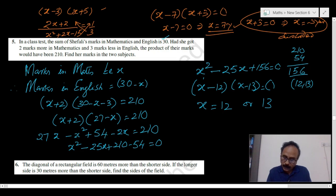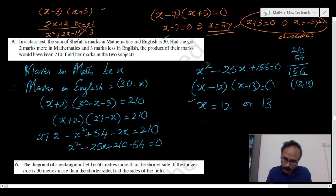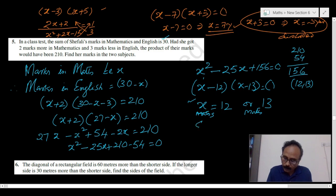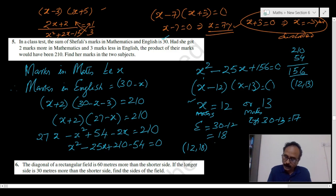If Mathematics marks are x, then English marks equal 30 minus x. So if Maths is 12, English is 30 minus 12 equals 18. If Maths is 13, English is 30 minus 13 equals 17. Therefore there are two solution sets: one is (12, 18) and the other is (13, 17) for Maths and English respectively.